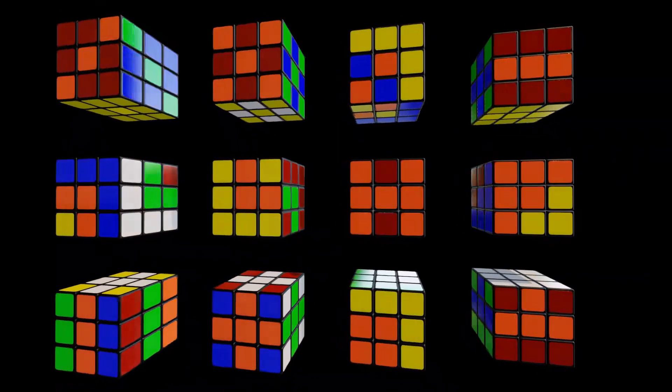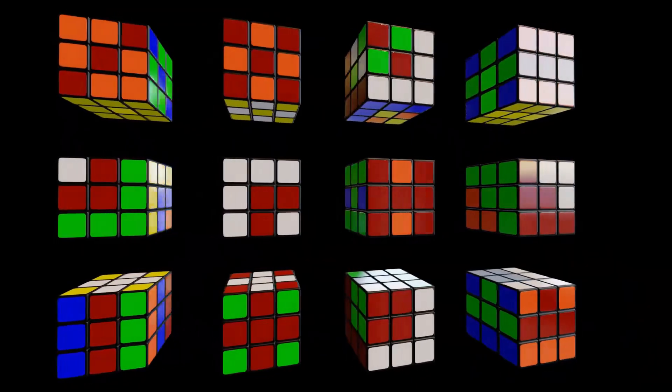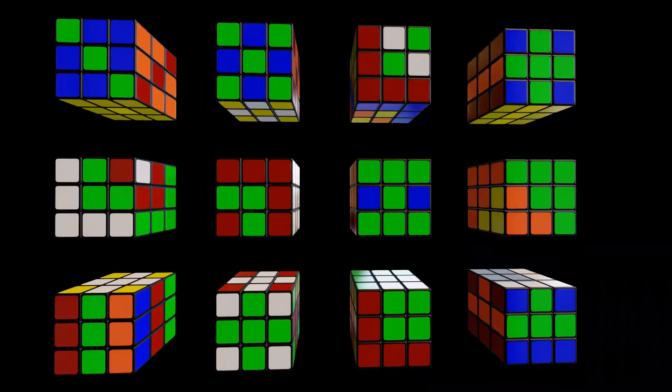However, most of the cube's possible configurations look nothing like that. Instead they are a chaotic mix of six colors arranged in seemingly random patterns.